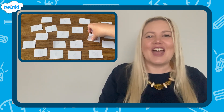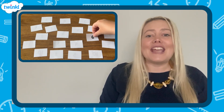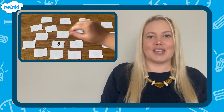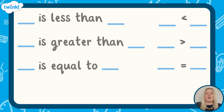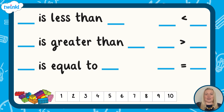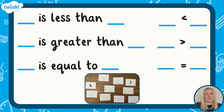Now it's your turn. Find or create some number cards and turn over two numbers. Use the words greater than, less than, or equal to to compare the numbers, using objects or a number track to help you. Can you write a comparing statement using the symbols that you've learned? Pause the video now and have a go.